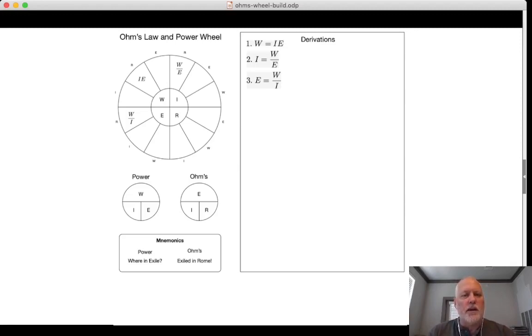Ohm's law works the same way. E is equal to I times R, and we can derive the other two. So getting on it, we have E equals IR. And we're going to put that in to the E quadrant. And we don't have W, so we're going to put it in the W sector.